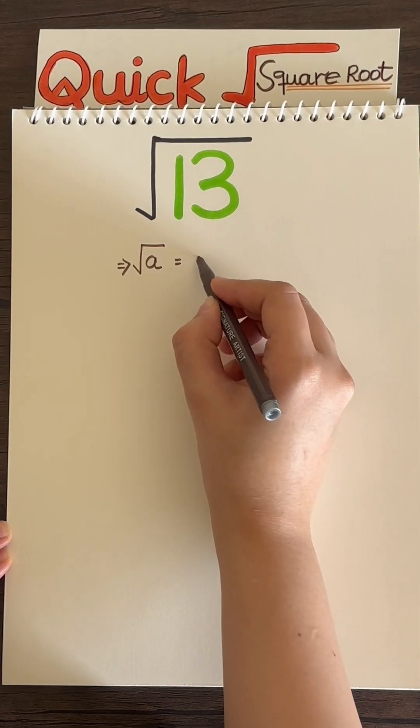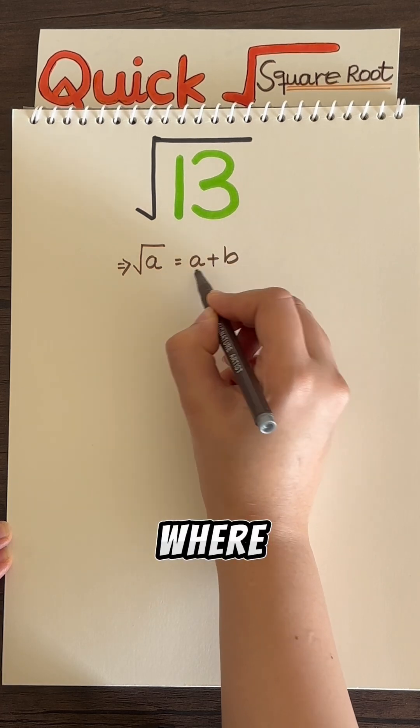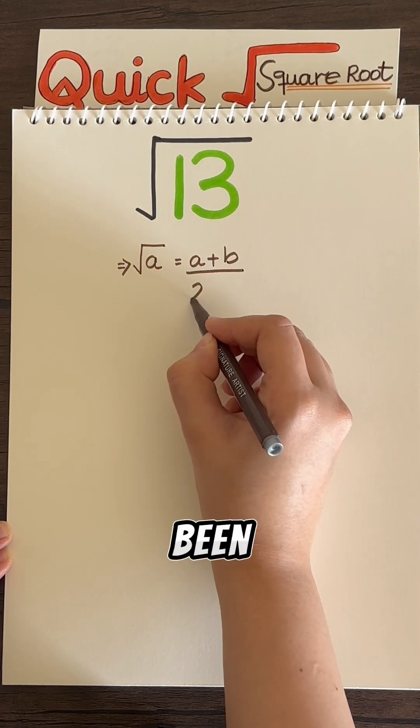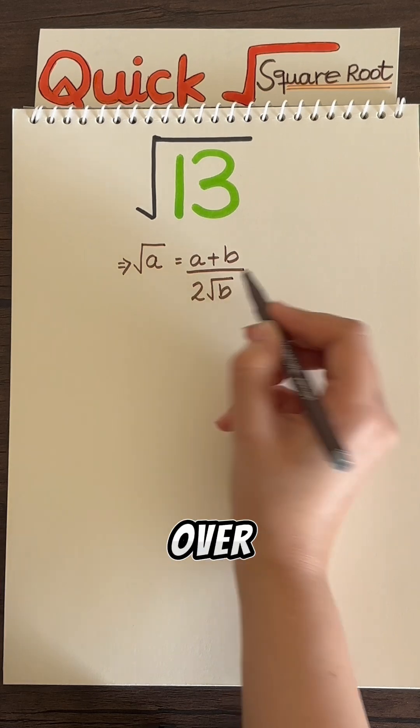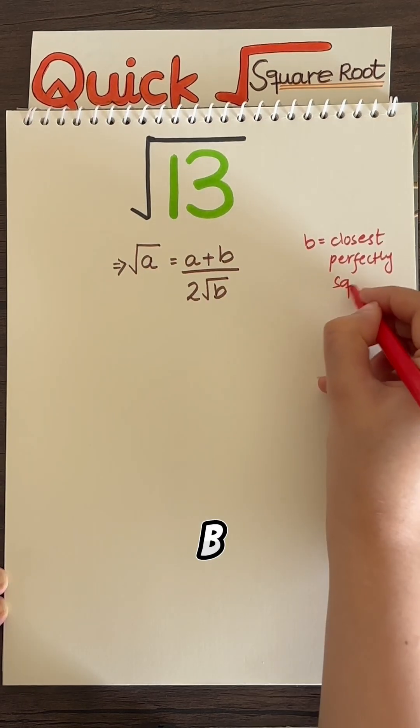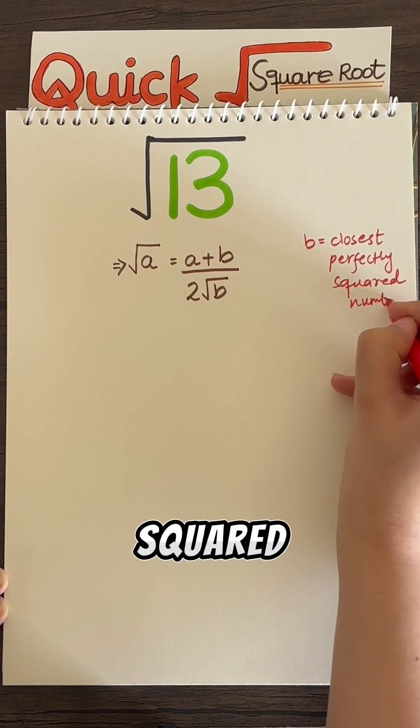This is the formula for taking the square root of any number in the world, where √a is the number whose square root has been taken, which equals (a+b) over 2√b, where b is the closest perfectly squared number.